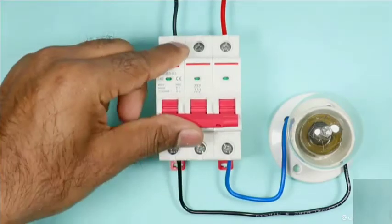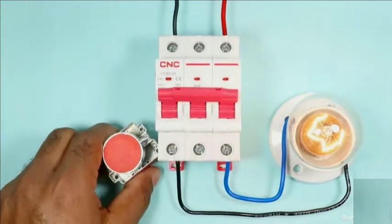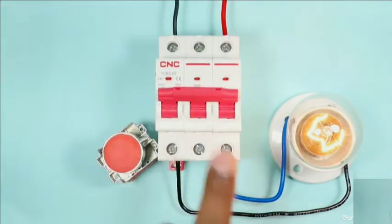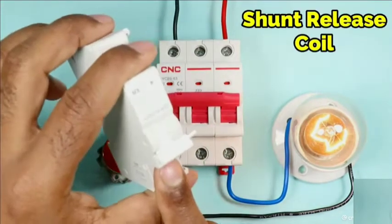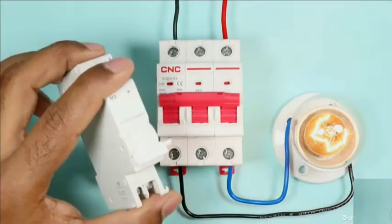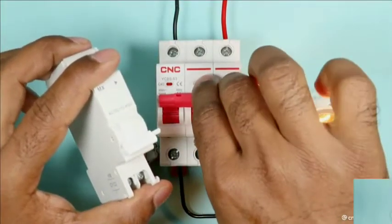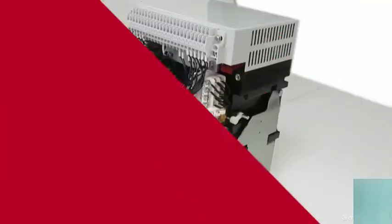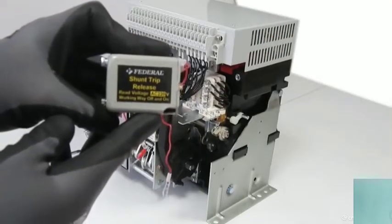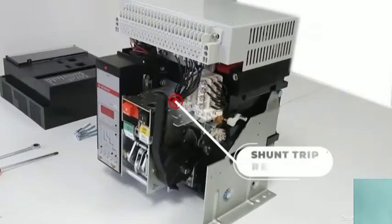If you want to turn off the MCB from a distance away, then by using push button you can turn off MCB, but you have to connect shunt coil with MCB through which we are going to turn off the MCB. If you disassemble the ACB breaker, you will find a shunt release coil through which we turn off the breaker.